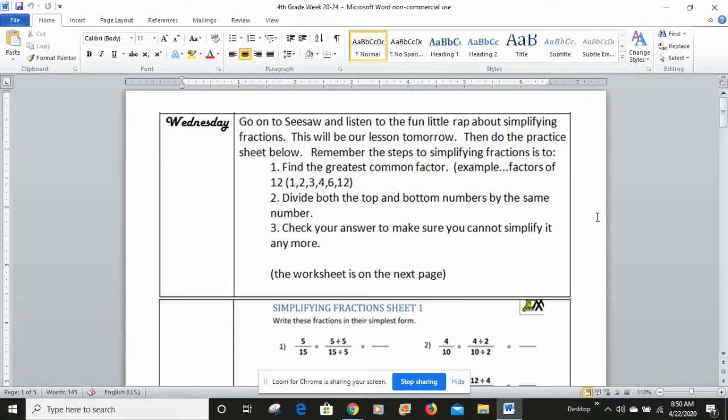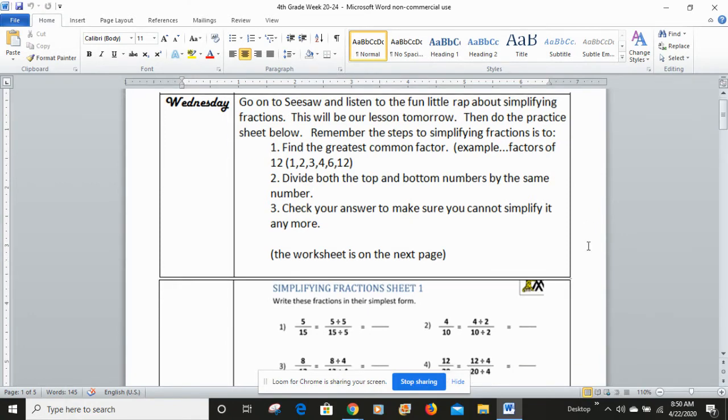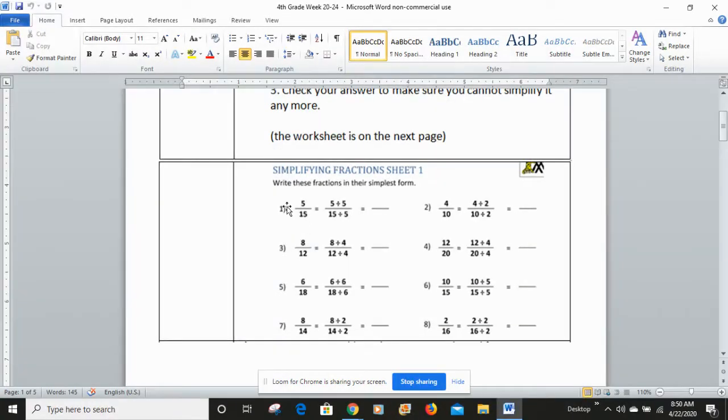Remember the steps to simplifying fractions is to find the greatest common factor, then divide both top and bottom numbers by the same number, check your answers to make sure you cannot simplify it anymore. So here are some of the fractions that we can simplify.